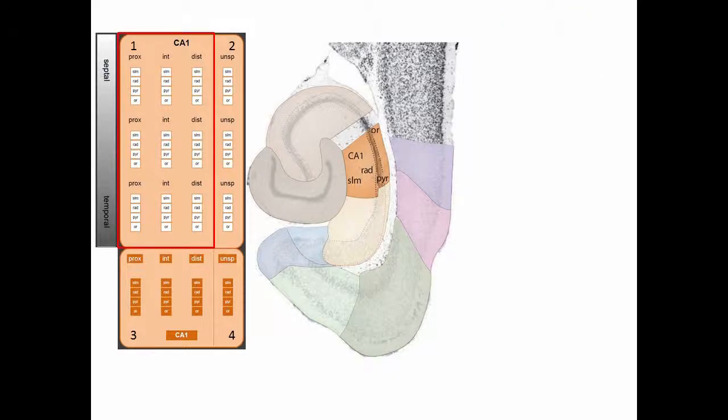Quadrant 1 describes connections at the highest level of anatomical detail. In the white boxes, we find the layers of CA1: stratum lacunosum moleculare, stratum radiatum, stratum piramidala, stratum orients.